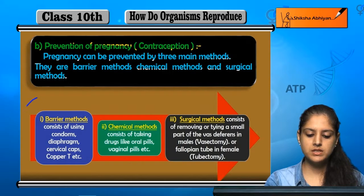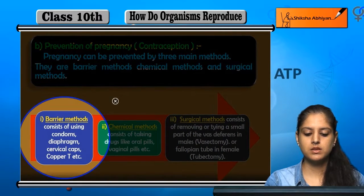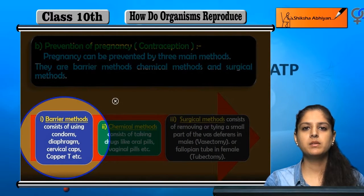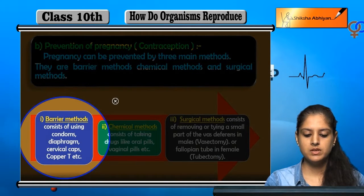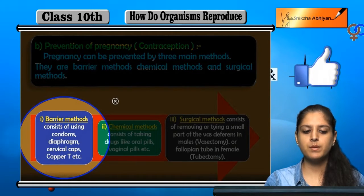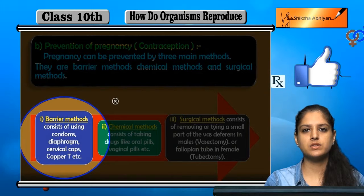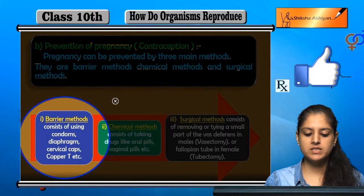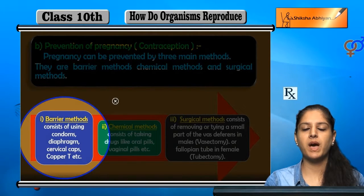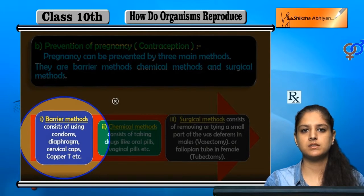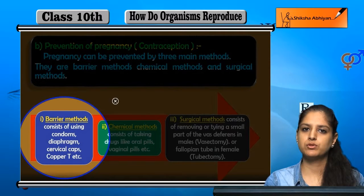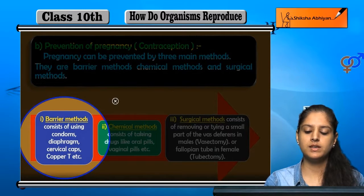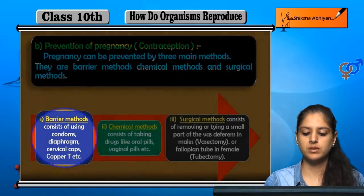First is barrier methods. Barrier method kya hai - it consists of using condoms, diaphragm, cervical caps, copper T, etc. Ye sab cheezain use karke hum ek barrier create kar sakte hain jisse ki sperms aur eggs ka fusion nahi hoga, aur ultimately pregnancy prevent ho jaaye.